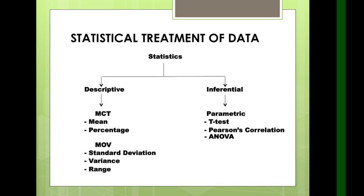When using inferential statistics, we use the parametric tests which are the t-test, Pearson's correlation, the ANOVA, and the Z-test. We use them in order to solve the significant difference and the significant relationship of a particular data.